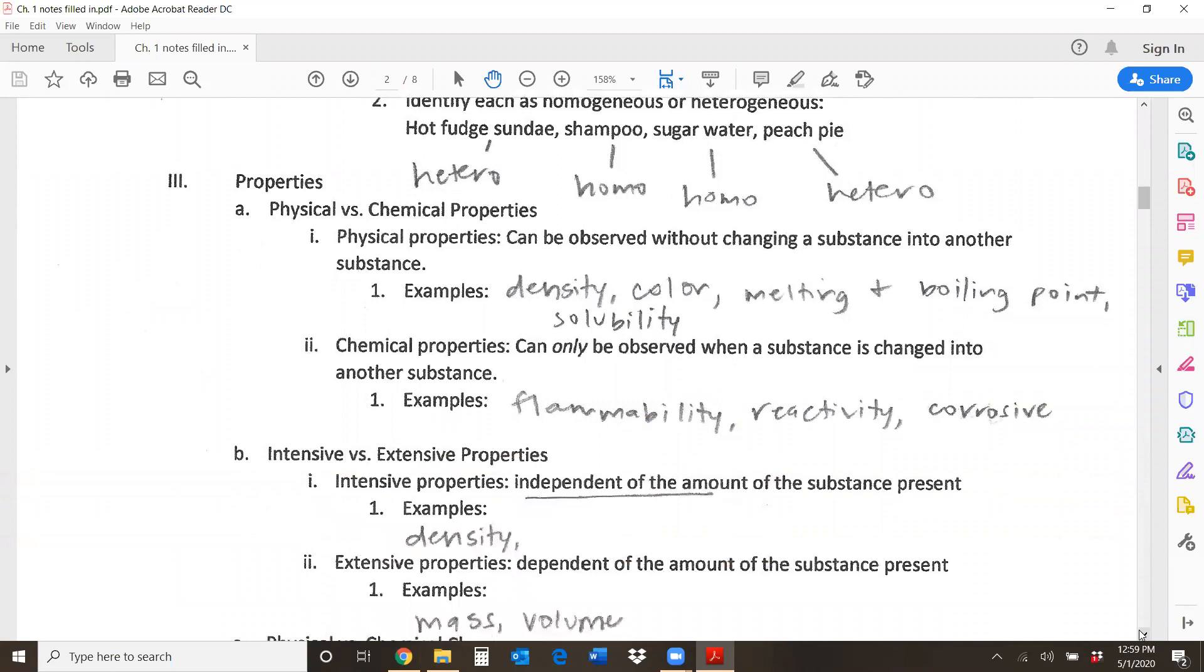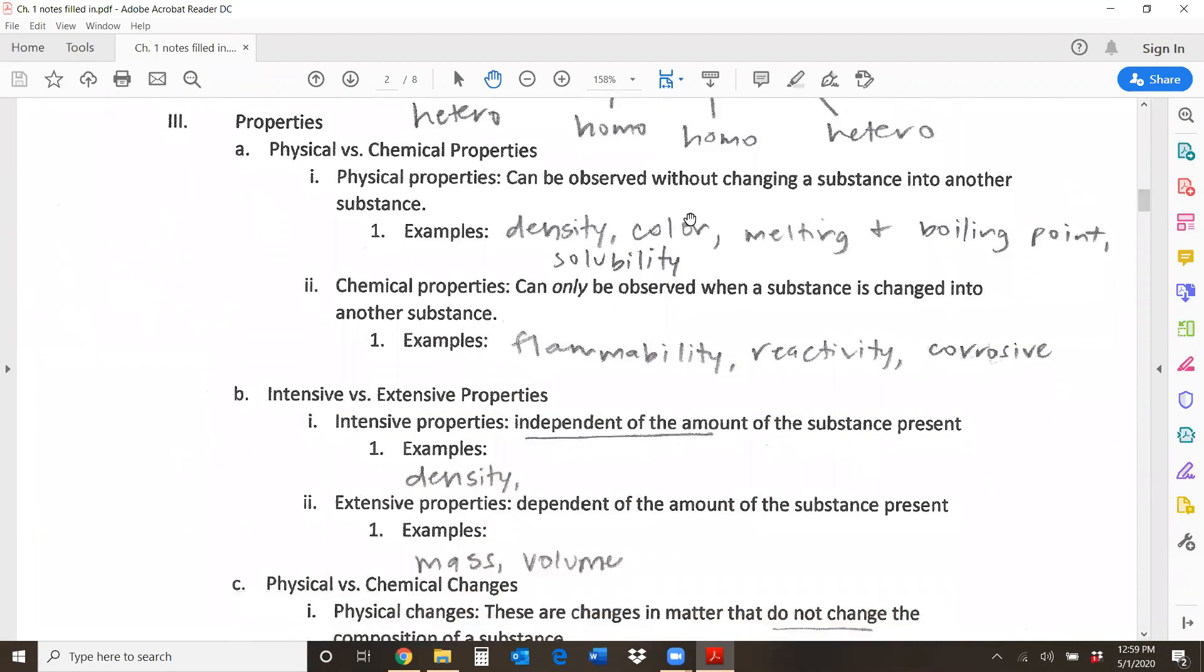Properties, physical versus chemical properties. Physical properties are things that you can see and smell about a substance. So you don't have to change the substance in order to see these. So physical properties include density, because you can get the mass and you can get the volume without changing color, melting and boiling points, solubility. How well does it dissolve in water or another solvent? Chemical properties, however, you can only see them when you change the substance. So are they flammable? Well, to see that property, you need to burn it, and therefore you're changing the substance. How does it react with an acid? How does it react with the base? Is it corrosive? Will it rust? Those are chemical properties.